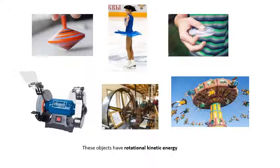There's a spinning top, there's the ice skater spinning round, these things called spinners that kids were crazy about a few years ago, the wheel on a grinding machine, this bit of an engine, this bit of an old steam engine. There's a massive flywheel which has rotational kinetic energy at the funfair, all kinds of rides spinning around. So things which are rotating have rotational kinetic energy — it may also have linear kinetic energy, which is what we've done in the past, but this is rotational KE.